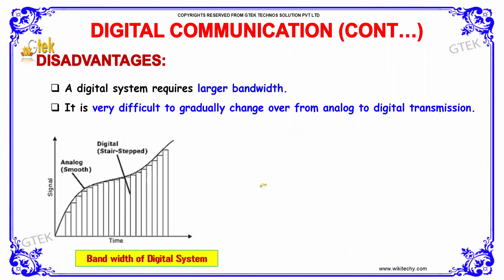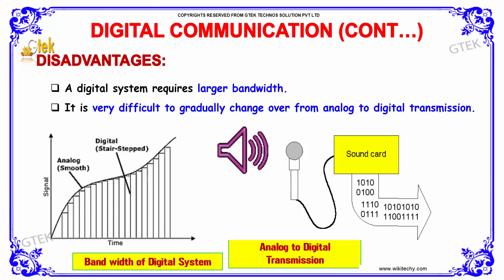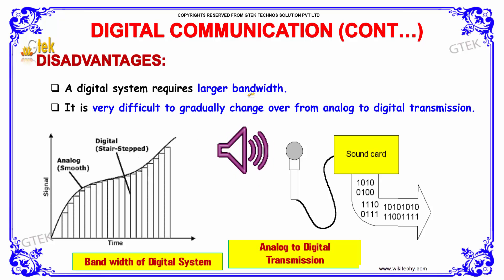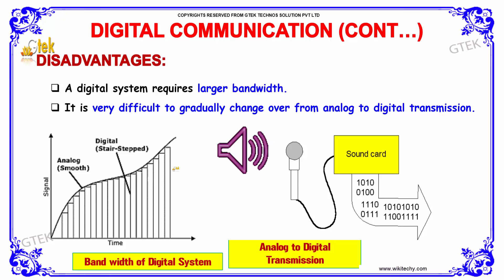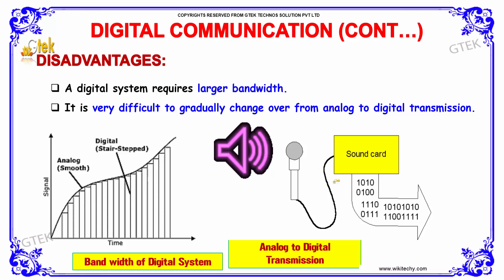If we talk about the digital communication disadvantages, a digital system requires a very large bandwidth — analog is lesser and digital is higher. It is also very difficult to gradually change over from analog to digital transmission.